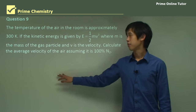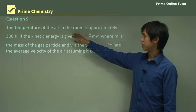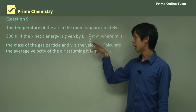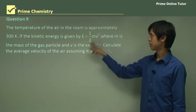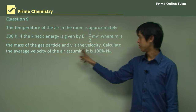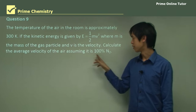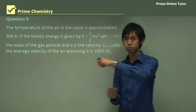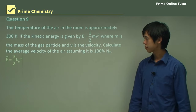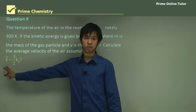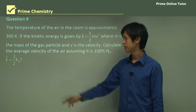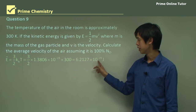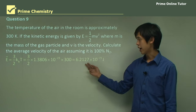Question 9: The temperature of the air in the room is approximately 300 Kelvin again. If the kinetic energy is given by E = ½mv², where m is the mass of the gas particle and v is the velocity, calculate the average velocity of the air assuming it is 100% nitrogen. We want to know the average speed of the gas particles. We start by calculating the average kinetic energy — same as the last question, giving 6.2127 × 10⁻²¹ joules.